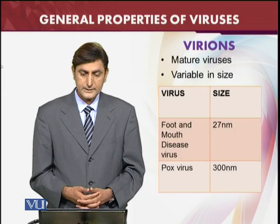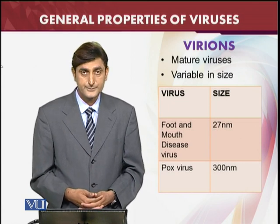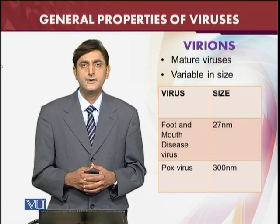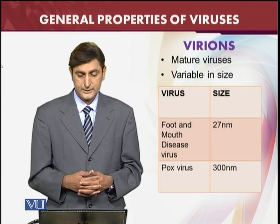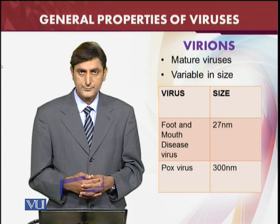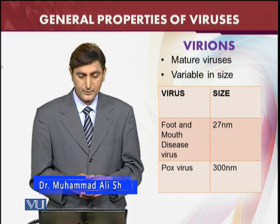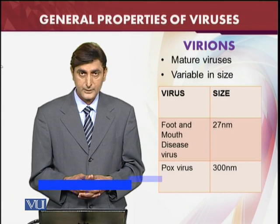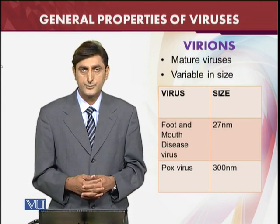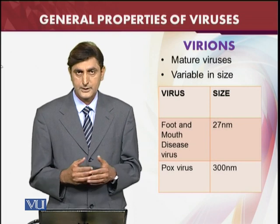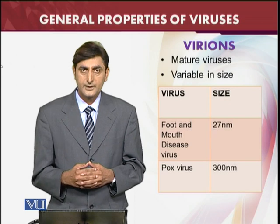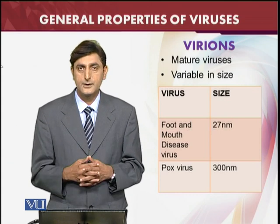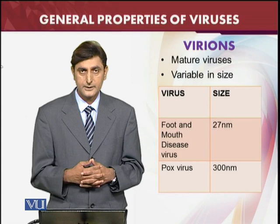General properties: first of all, the adult viruses are called virions. Virions are variable in size and their size range is really very wide. For example, the foot and mouth disease virus is 27 nanometers, while the pox virus — for which the first vaccine was developed — is 300 nanometers. So viruses of 20 nanometers and viruses of 300 nanometers are both present and causing different diseases.